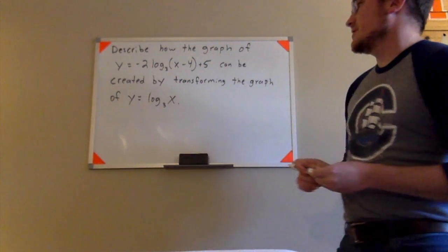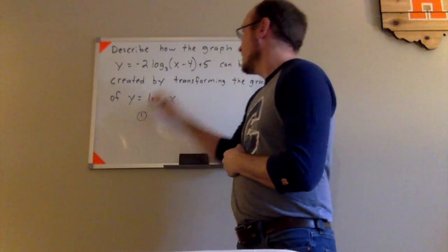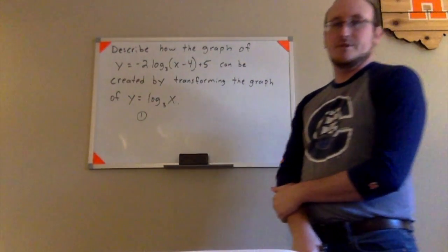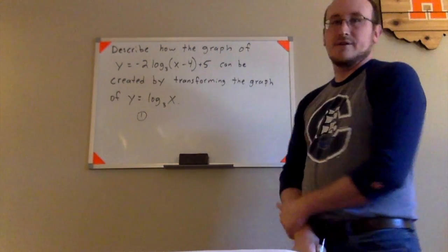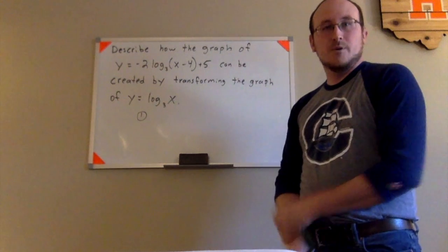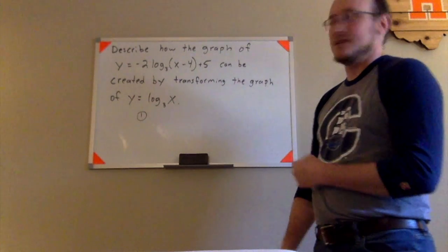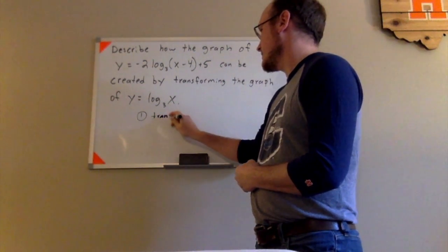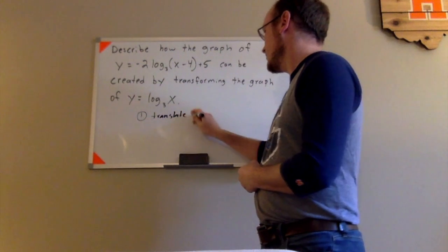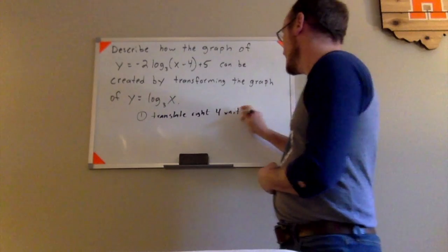So the first thing that I'm going to do here to transform this graph would be to look inside the parentheses and talk about any horizontal translations. So on the inside here, I see an x minus 4. That x minus 4 on the inside is actually going to indicate that we have a horizontal translation of 4 units to the right. Translate right 4 units.